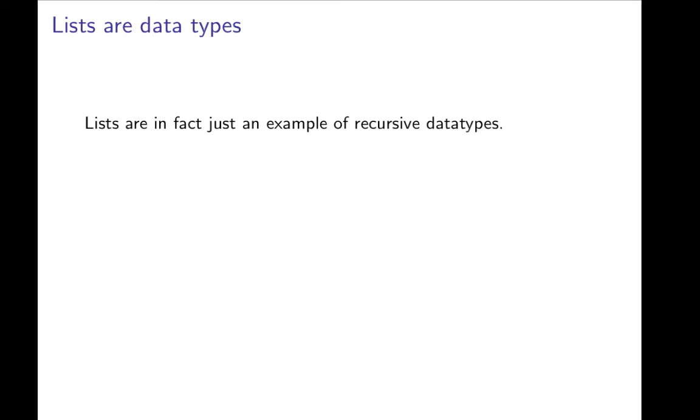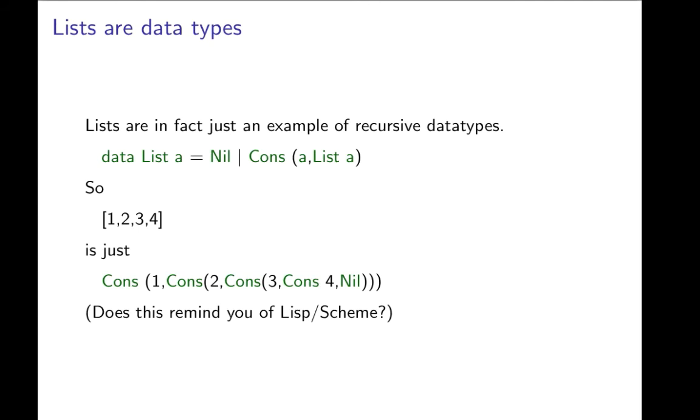Now, lists are in fact just data types. Lists are just an example of a recursive data type. Here is the definition of the data type list A, and its elements are nil, and elements for which the term constructor cons has been applied to an element of type A and an element of list A.